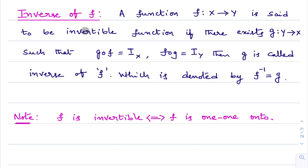In the matrices chapter also, we learned about invertible matrices. Let A be a square matrix of some order; then there exists another matrix B such that AB = BA = I, then B is called the inverse of A.